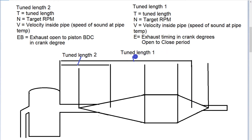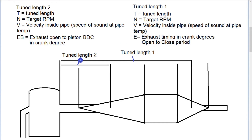To calculate those tune lengths, we need to decide when it's best to have the signal come back — both the expansion and compression waves. We know with the compression wave returning on tune length one that's the port plug, so we want that timing at a certain RPM. How much time is there between when the piston opens the exhaust port and again when it closes — that's the exhaust timing in degrees, the open-to-close period. So that's tune length one, and that's fairly straightforward.